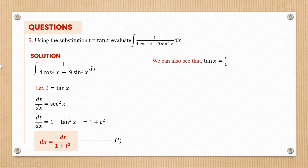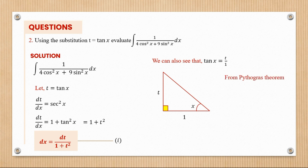Next, we remember that tan x equals t over 1, and we can place that in a right angle triangle. The angle is x, the opposite side is t, and the adjacent side is 1. From Pythagoras' theorem, we can find the hypotenuse, which equals root of 1 plus t squared.